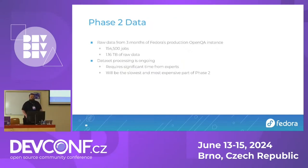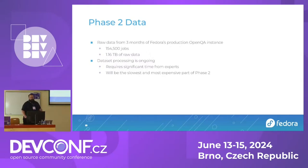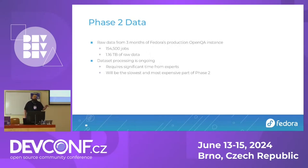Gathering data for phase two: instead of two weeks like the last one, we're gathering three months of data — 154,000 jobs and about 1.2 terabytes of raw data. Now we're getting into the most expensive part, which is processing the data. Because in order to do the experiment, we have to go through, find the duplicates, identify them, cluster them, and then we can start doing more of the AIML work.